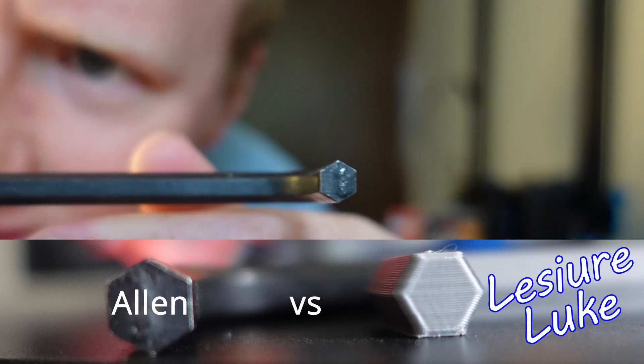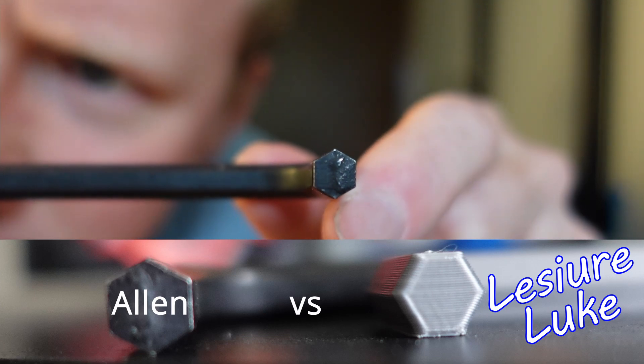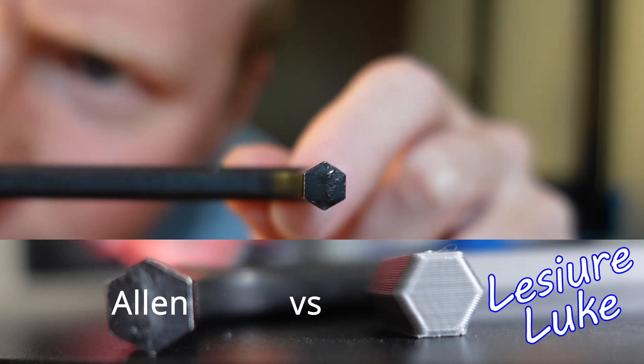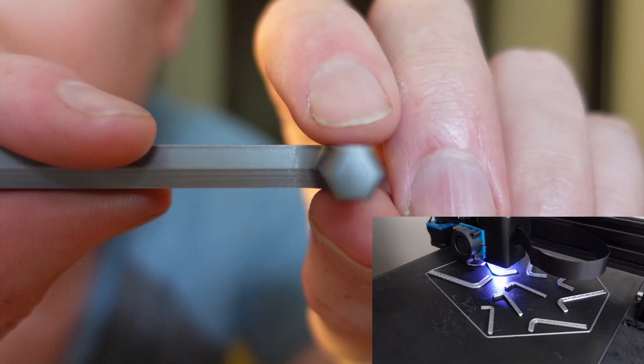If you lay it on its side, the edge is pointy, which means it's not able to be 3D printed. My newly designed Allen keys have a flat edge on the bottom while laying on their side.